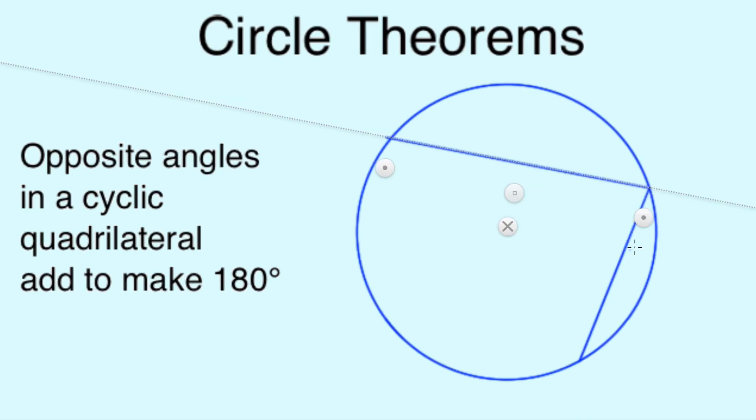If we draw any quadrilateral in a circle, and all the corners touch the circle, it is known as a cyclic quadrilateral, and where we have a cyclic quadrilateral, the angles opposite one another will always add up to 180 degrees.